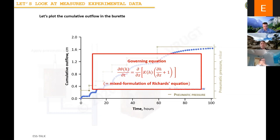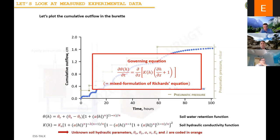This is the mixed formulation with H — the soil water pressure head — on the right side, and theta — the moisture content — on the left-hand side. To solve this equation, we need the soil water retention function and hydraulic conductivity function. Those are two equations in the formulation of Van Genuchten — a famous paper from 1980, probably the most cited paper in hydrology. The parameters I've highlighted in dark red — theta_S, theta_R, alpha, N, K_S, and lambda — are the six we need to estimate from the multi-step outflow experiment.